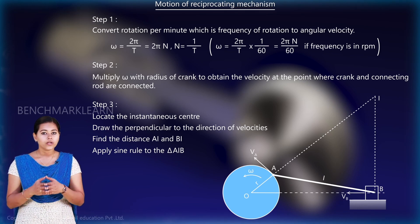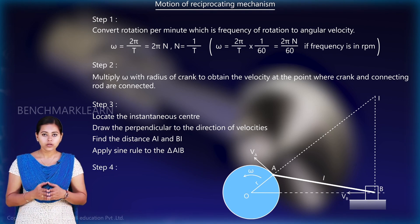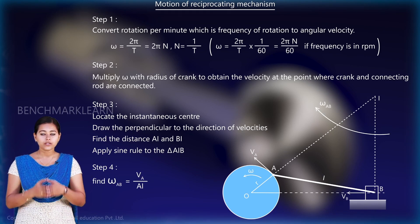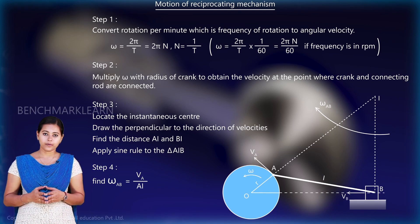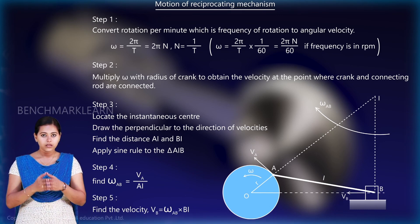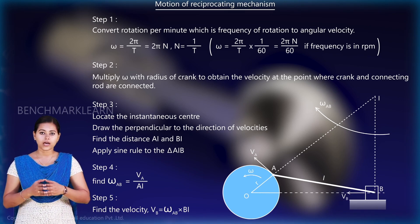And in the fourth step, we will find ω_AB using the equation BA/AI. And in the fifth step, we can find the velocity v_B using the equation v_B = ω_AB × BI.